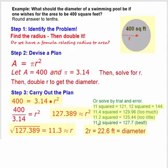That tells us that our answer to the nearest tenth is probably 11.3. So 11.3 squared gives us 127.7, which is very close to 127.389. So by trial and error, we could get the answer of 11.3.